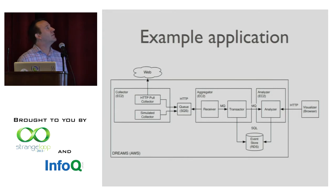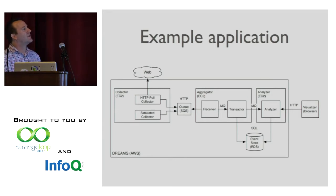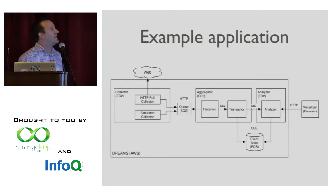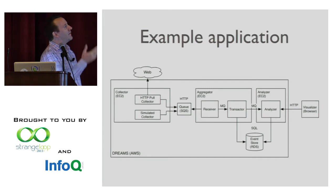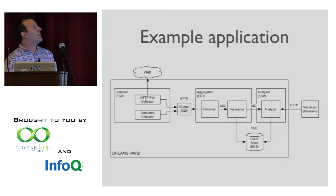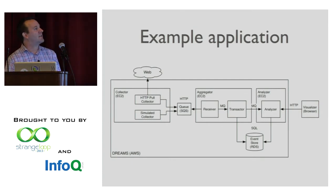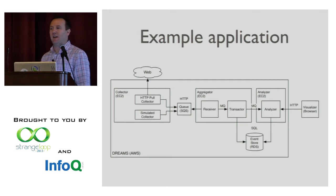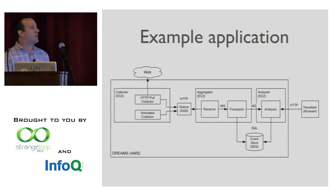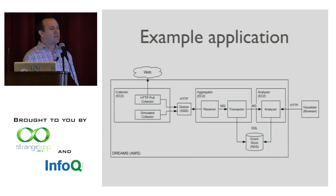This is a very high-level overview of the architecture of the whole system. We have a system deployed on AWS. Going from left to right, we have collectors which are pulling or having data pushed to them, putting that data on a queue. We have aggregators pulling data off the queue, doing some processing, and sticking that data into Datomic. And then we have an analyzer which is notified whenever new data arrives in Datomic, pulling the new data out, rolling it up, and sending updates to the browser twice a second.